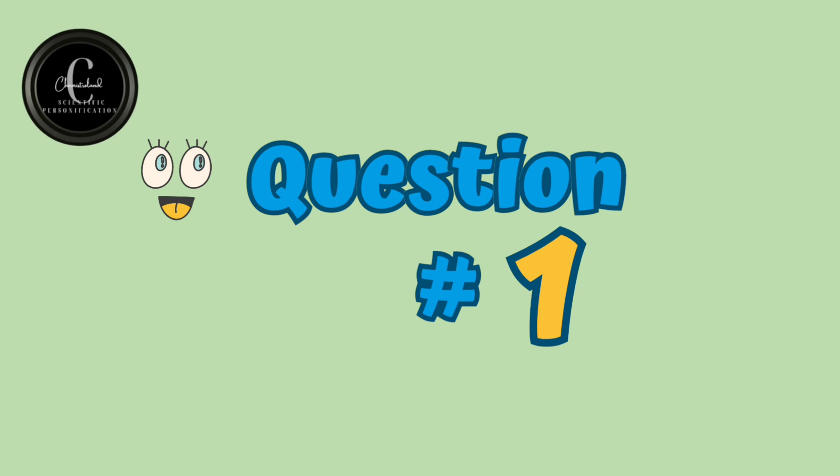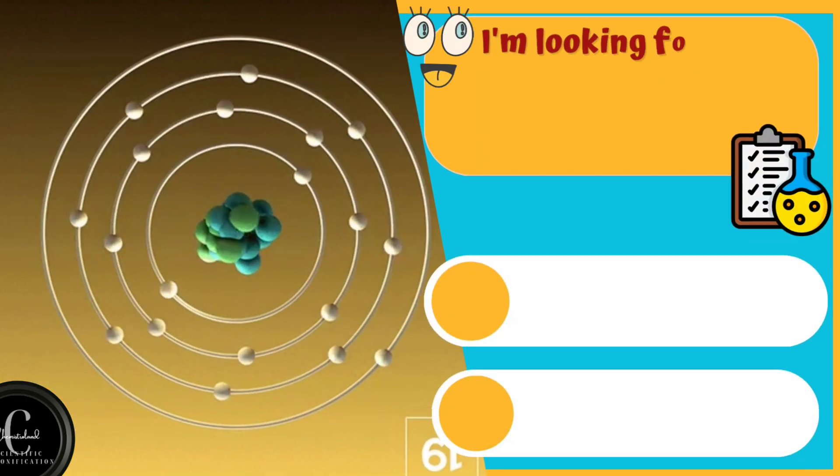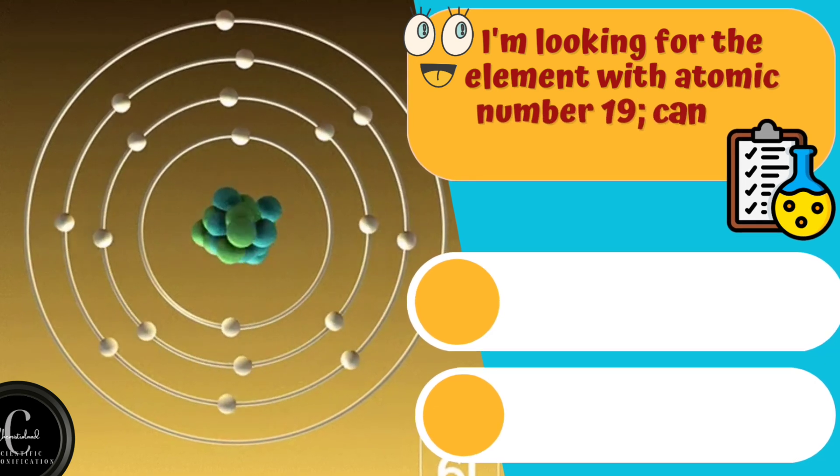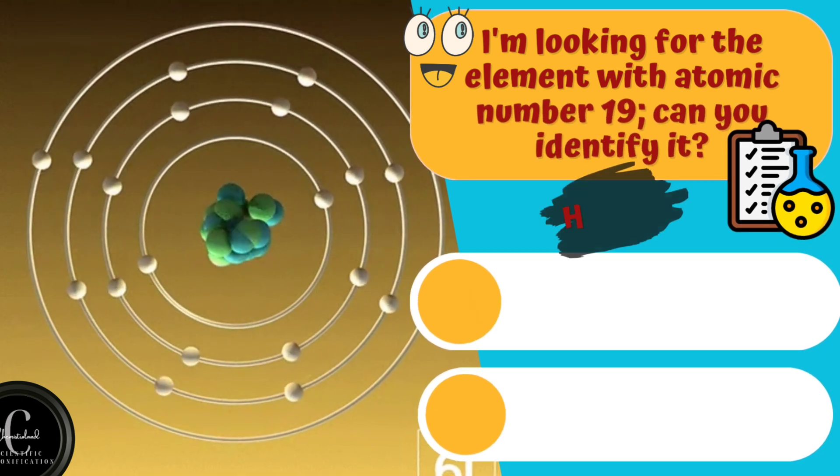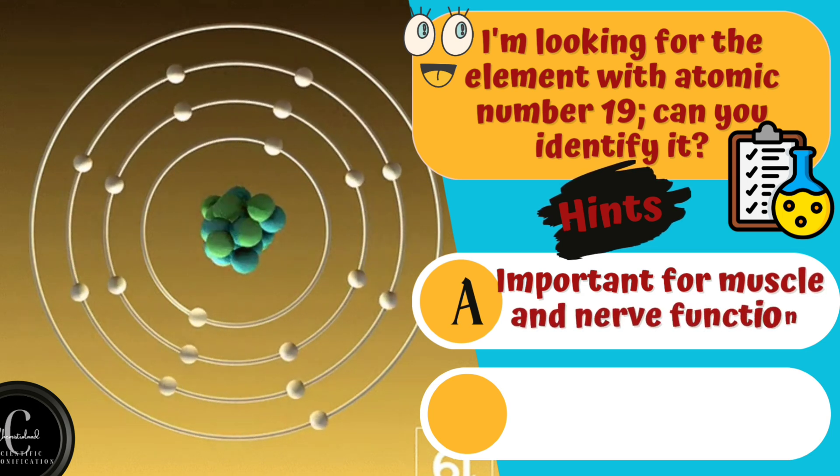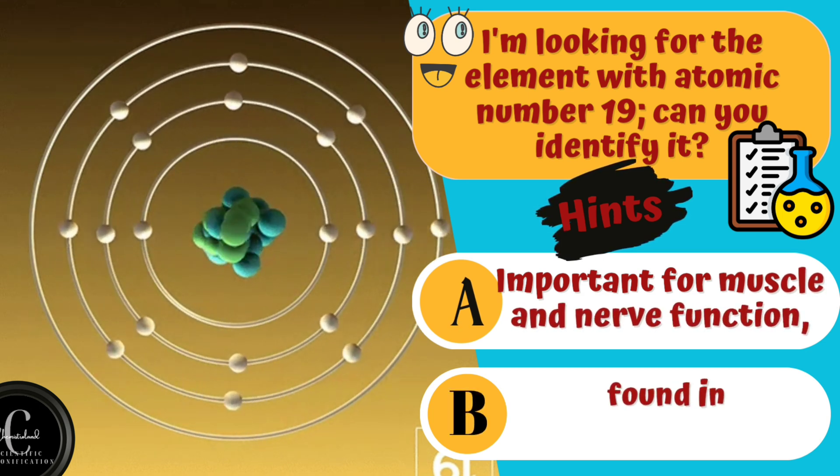Here is question number one. I'm looking for the element with atomic number 19. Can you identify it? Hints are A. Important for muscle and nerve function. B. Found in bananas and potatoes.